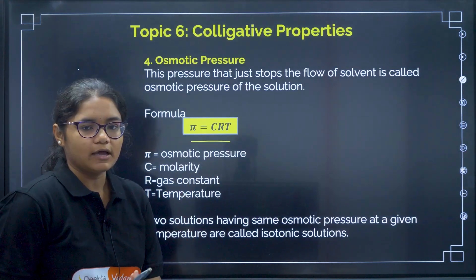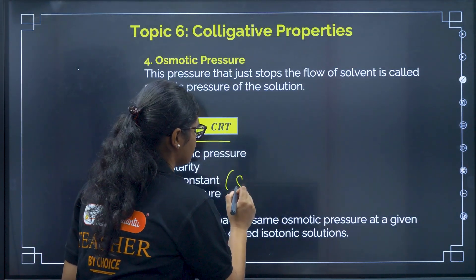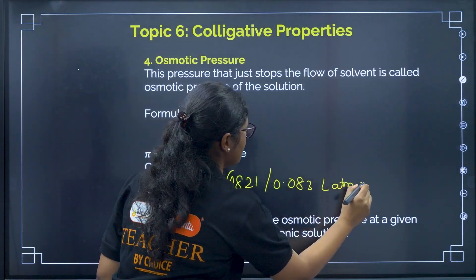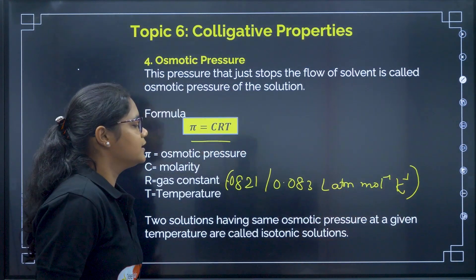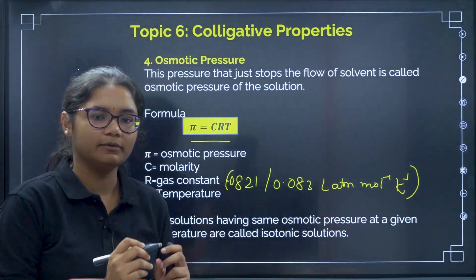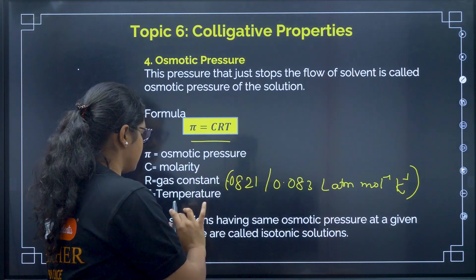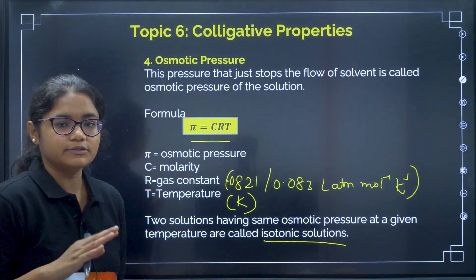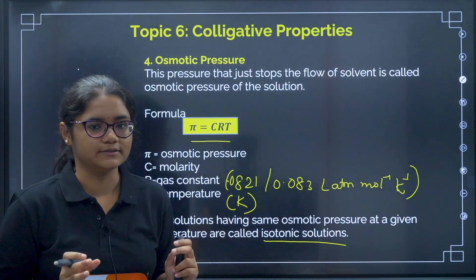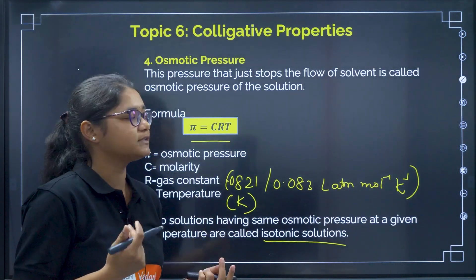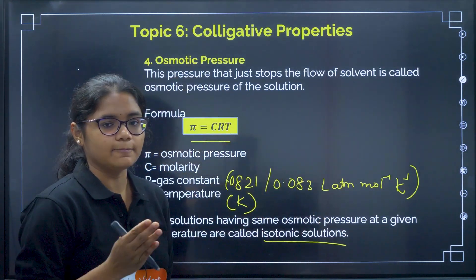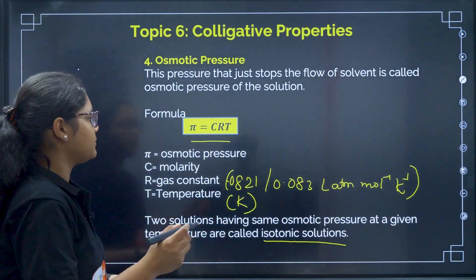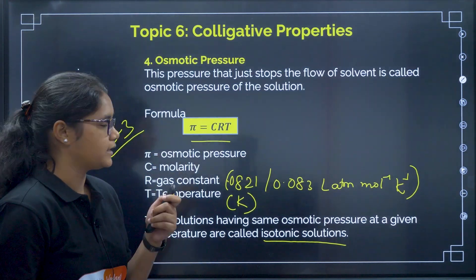Osmotic pressure — direct formula: π = CRT, where C is molarity, R is gas constant. Remember to use R = 0.0821 or 0.083 L·atm·mol⁻¹·K⁻¹; do not use 8.314. Temperature should be taken in Kelvin. Also remember the concept of isotonic solutions — two solutions having the same osmotic pressure. A common question gives two isotonic solutions where one concentration is given and you have to find the other. Prepare 2 to 3 numericals from this topic.